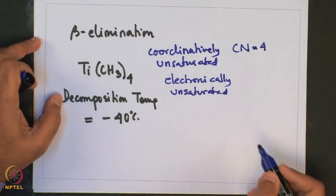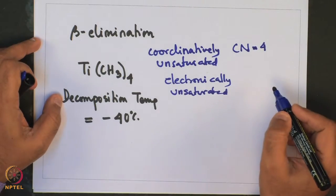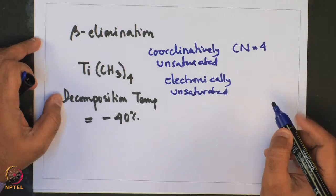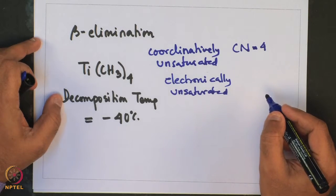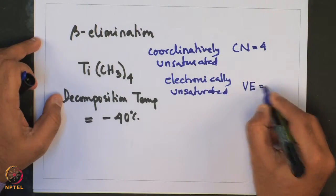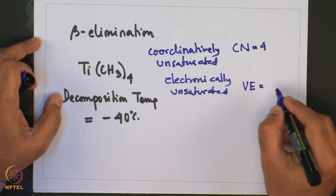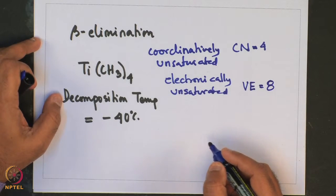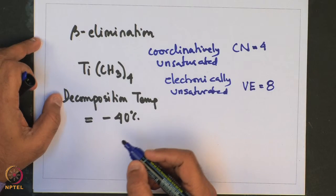From that perspective, titanium tetramethyl is still coordinatively unsaturated. It is also electronically unsaturated, as it has a total of only 8 valence electrons, as opposed to transition metal complexes that obey the 18 valence electron rule. So this compound is highly electronically unsaturated.